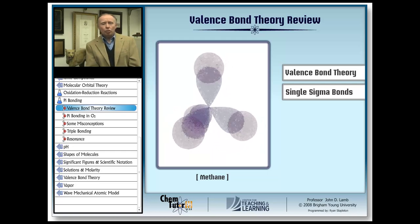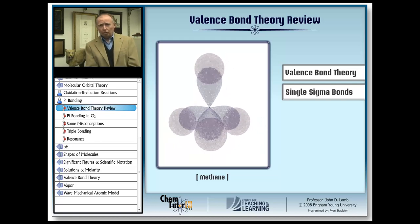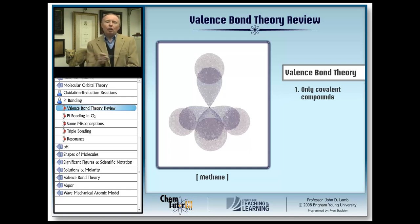To start, let's just review a few of the fundamentals of valence bond theory. First, keep in mind that everything we talk about here refers only to covalent compounds, that is, compounds between nonmetals which exist in the form of discrete molecules held together by covalent bonds like methane.